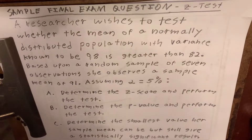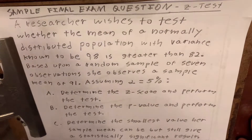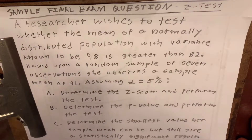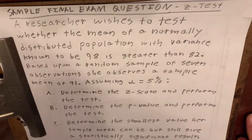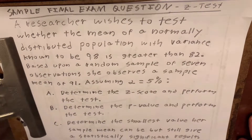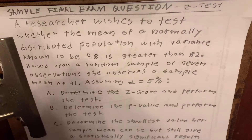Based upon a random sample of seven observations, she observes a sample mean of 91. Assuming the significance level is 5%: A, determine the Z-score and perform the test; B, determine the p-value and perform the test; C, determine the smallest value her sample mean can be but still give a statistically significant result.